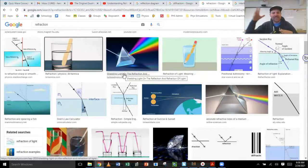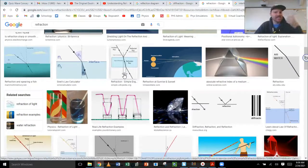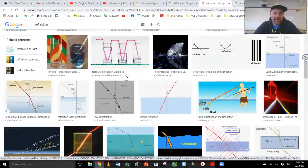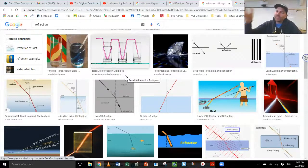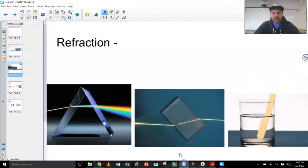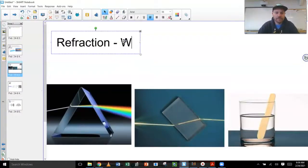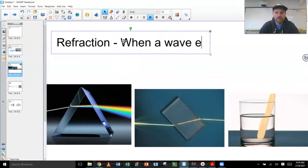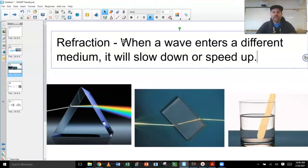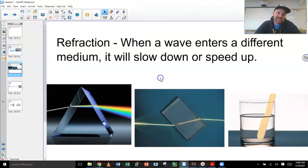When a wave enters into a different medium, it could be sound, it could be a wave on water, it could be light. When a wave goes from one medium into another medium, it will slow down or speed up. That slowing down or speeding up causes it to kind of bend.